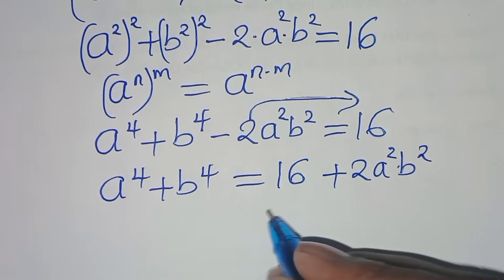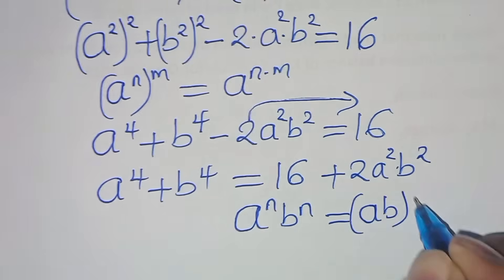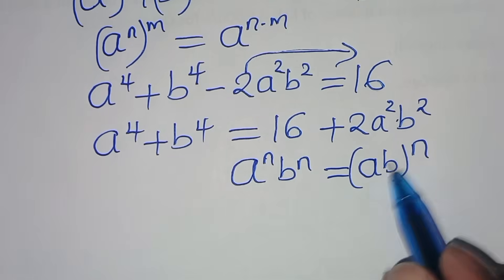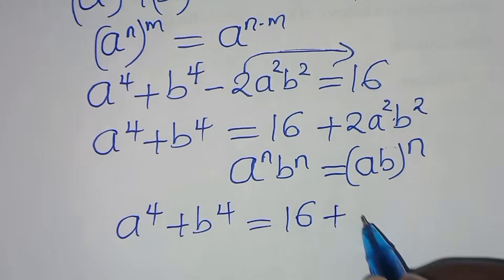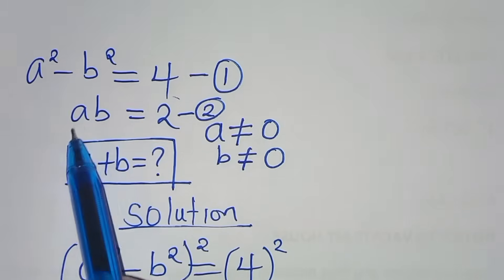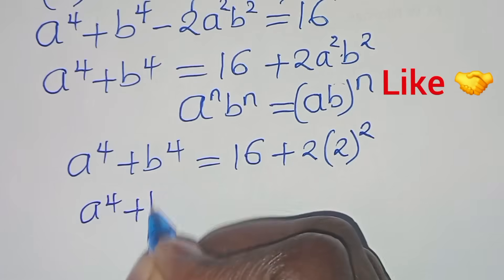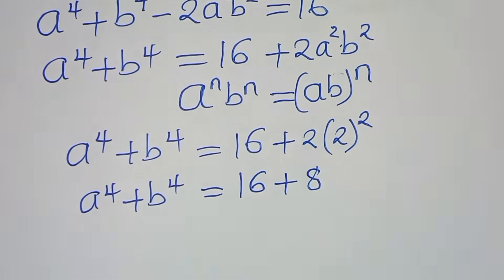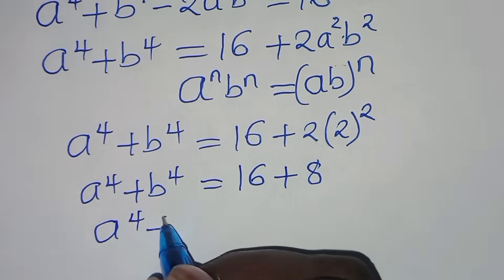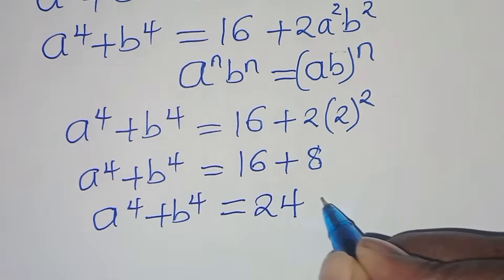Taking the minus 2a squared b squared to the right-hand side, we get a to the power of 4 plus b to the power of 4 equals 16 plus 2a squared b squared. Now a squared times b squared can be expressed as (ab) squared. Since ab equals 2 from equation 2, we substitute to get 2 times 2 squared, which is 2 times 4 equals 8. So a to the power of 4 plus b to the power of 4 equals 16 plus 8, which equals 24. Let's call this equation 3.